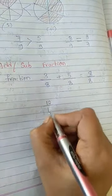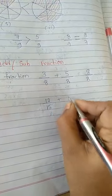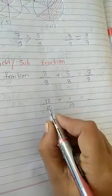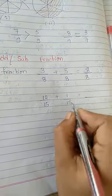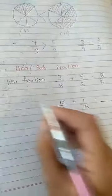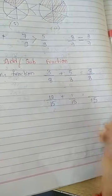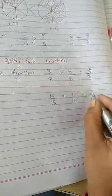For example, 12 by 15 plus 1 by 15 is there, what is our first step? We have to check whether the denominators are same. Yes, of course, these are the like fraction. Hence, the denominators are same. I am going to write the denominator as it is. 12 plus 1 is 13 by 15.